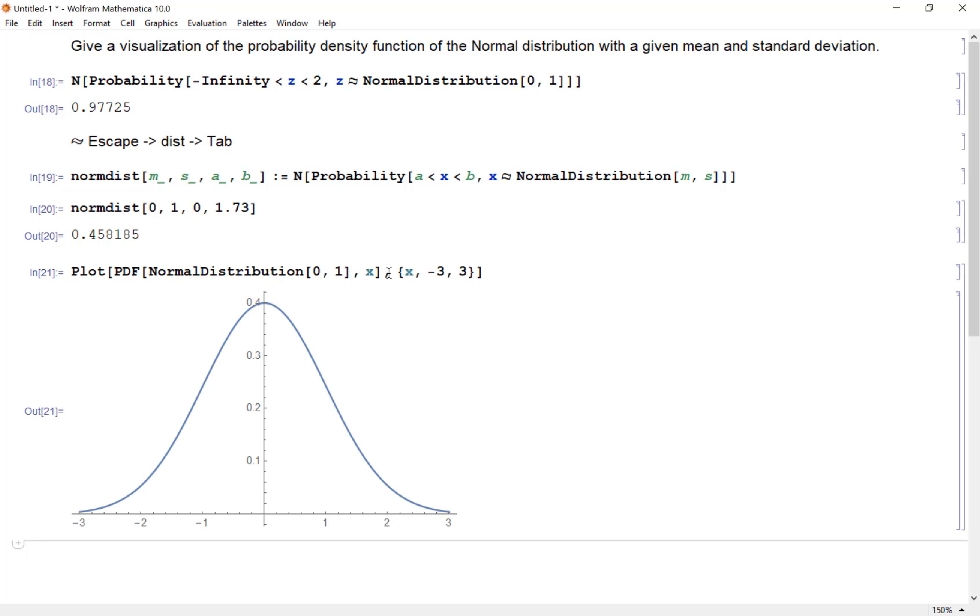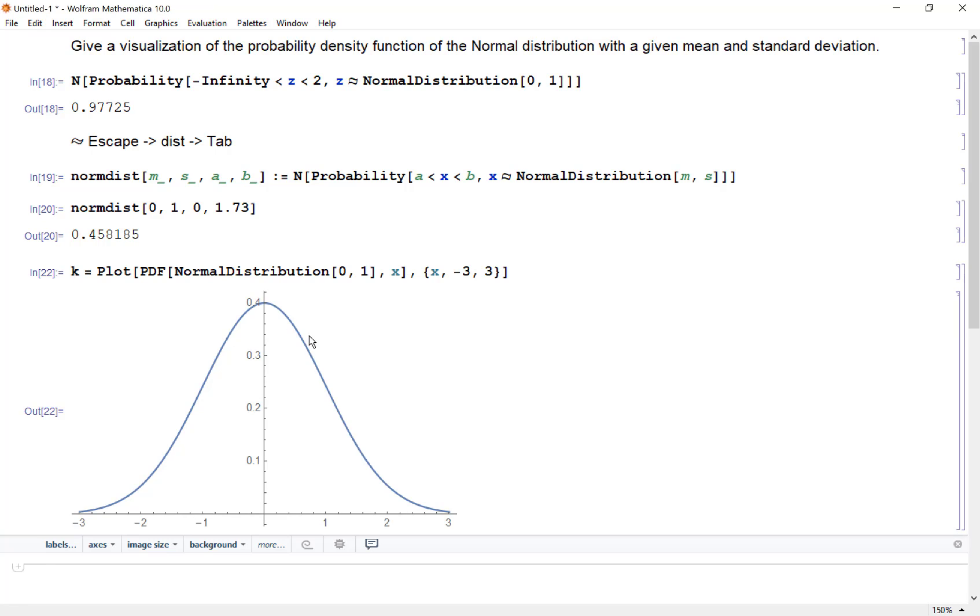I think that's sufficient because we know that going three standard deviations in both directions gives you 99.7 percent of the curve and I'm going to label this graph k so we can reference it later. So there is the actual curve, that's the whole curve, but this would be the area under the curve going from 0 up to 1.73.